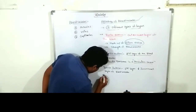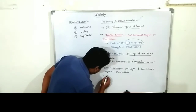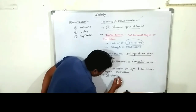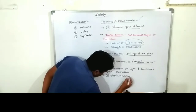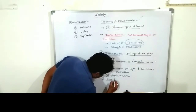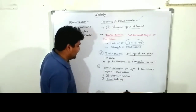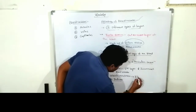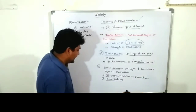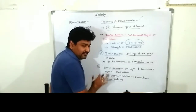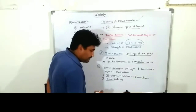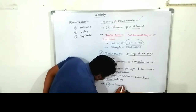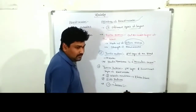Tunica interna consists of two different types of layers: the first one is the elastin membrane, which contains elastin fibers, and the second one is the endothelium — 'endo' means inner, 'thelium' means layer. The blood vessel also has a cavity called the lumen, which is used for transporting blood.